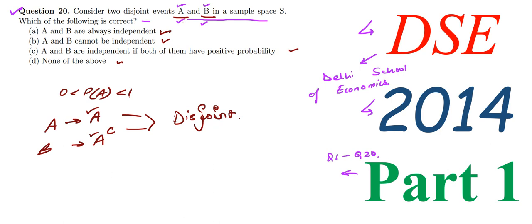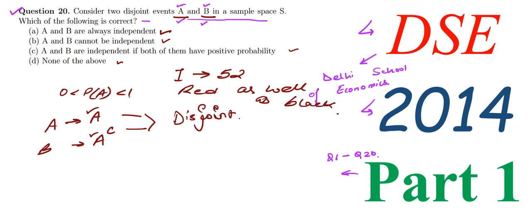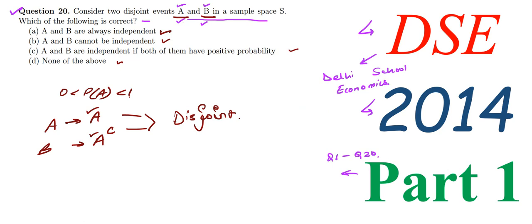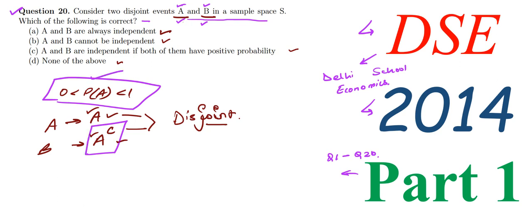Disjoint because an event A and its complement cannot happen together. For example, if we draw one card from a pack of 52 cards, we cannot get a red card as well as a black card — these two are complements of each other. So when we draw one card, we cannot get both red and black; these are disjoint events. Here also, A and A complement are disjoint, and they have positive probability — the probability of A complement will also be between 0 to 1 — but they are not independent.